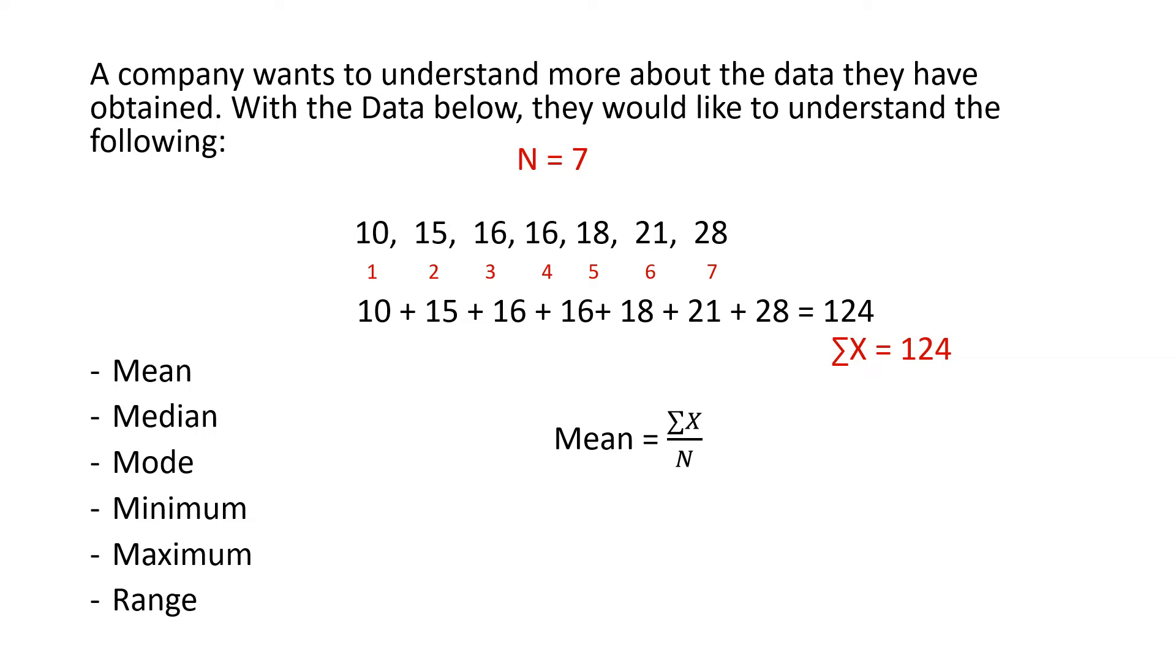When we add up all of our data, we come up with 124. We will take the sum of all of our x's, 124, and divide it by our n, 7, to find the mean. The mean is 17.71.